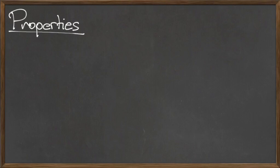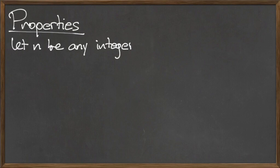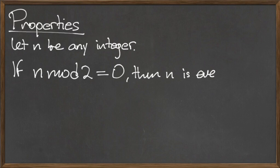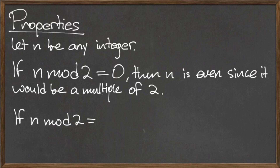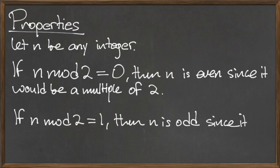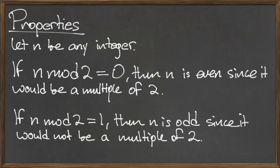Now that we know how to find a mod b, we can use mod to define what it means for a number to be even or odd. Let n be any integer. If n mod 2 is equal to 0, then n is even, since this means that n is a multiple of 2. If n mod 2 is equal to 1, then n is odd, since this means that n is not a multiple of 2.